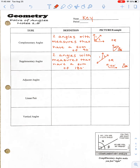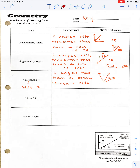So complementary and supplementary angles can either be joined or separate. Adjacent angles — the word adjacent means next to. Adjacent angles are two angles that have a common vertex and side. In other words, they're attached to each other. For example, angle 1 and angle 2 are adjacent because they are next to each other — they share a common vertex and a common side.